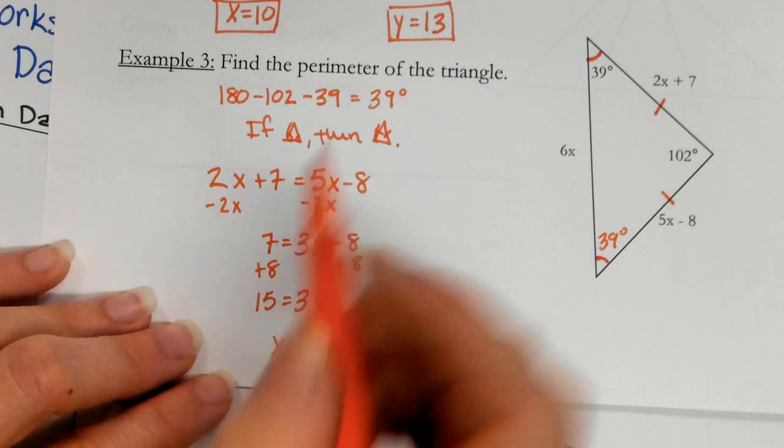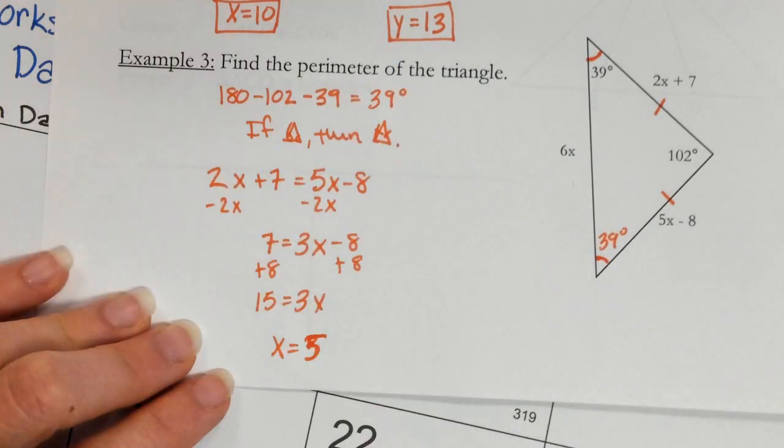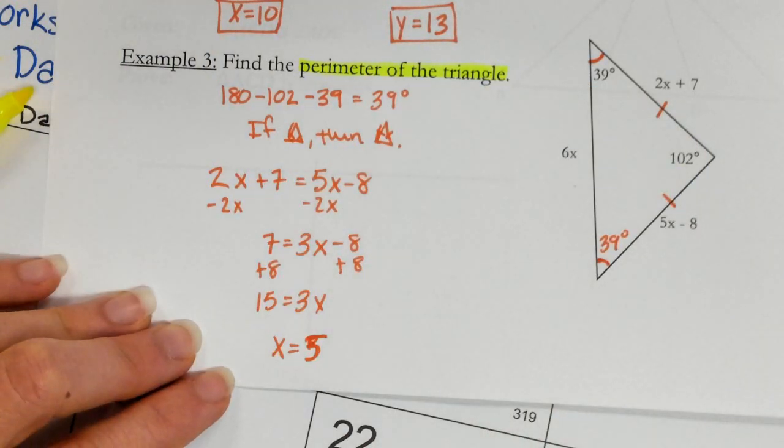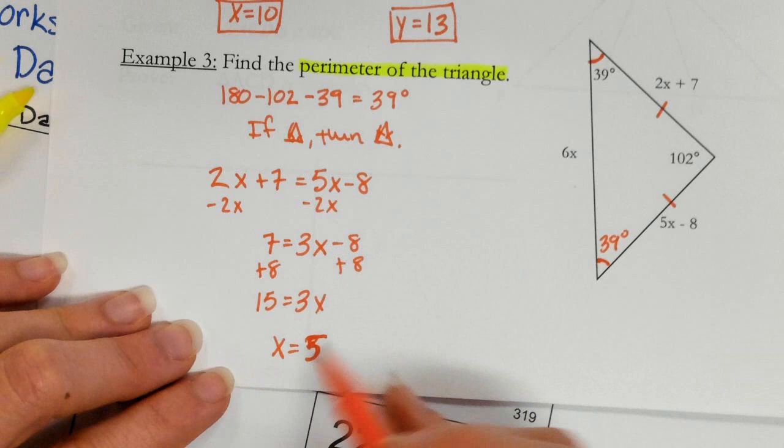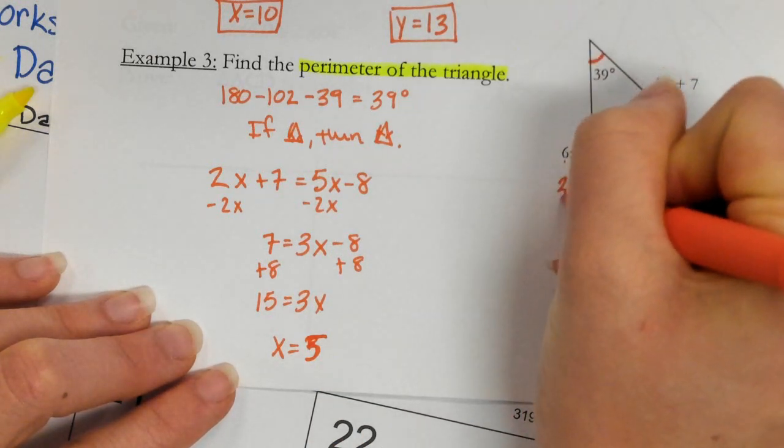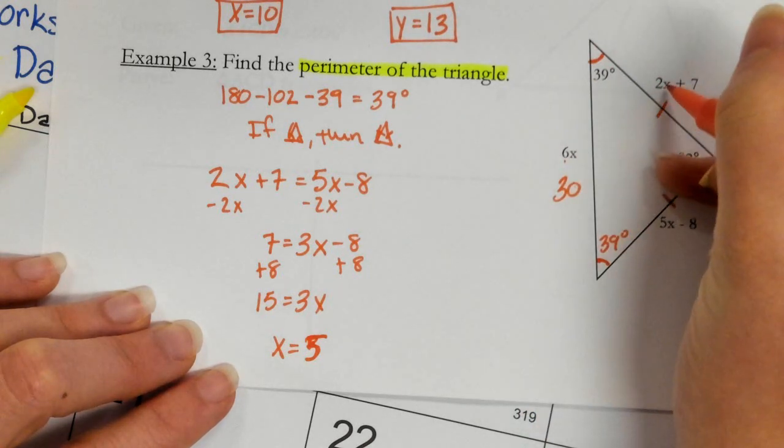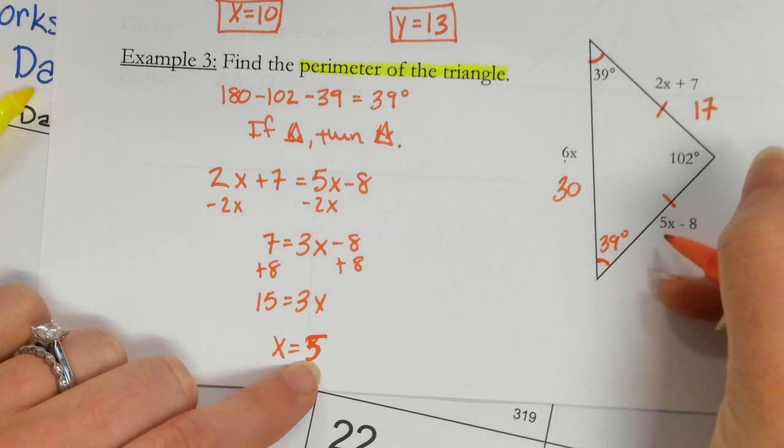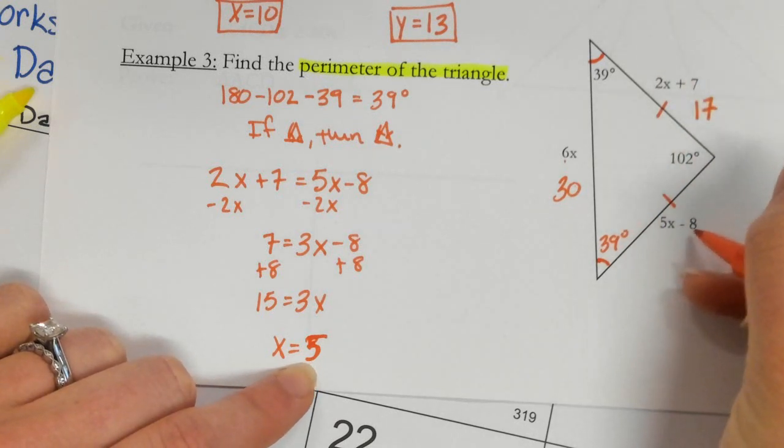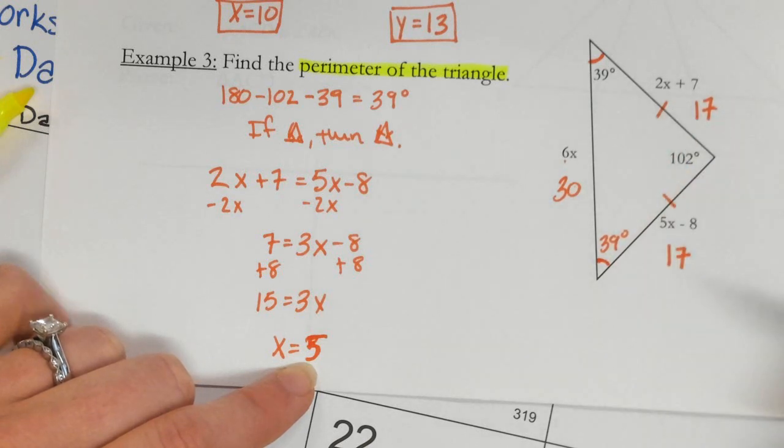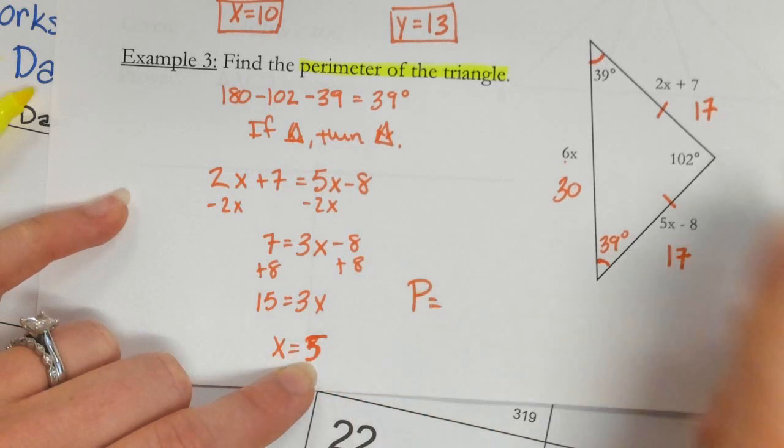So x is 5. But now it asks you to find the perimeter of the triangle. So we've got to make sure we remember what they're asking us for. So now I need to plug it back in. Well, 6 times 5 is 30. 2 times 5 is 10 plus 7 is 17. 5 times 5 is 25 minus 8 is also 17, which we should have known because of the tick marks. And your perimeter means everything added up on the outside.